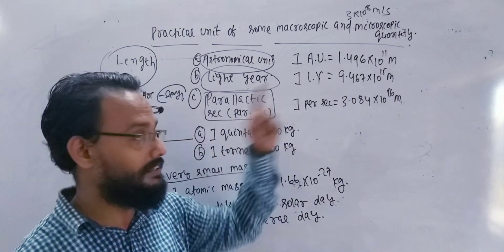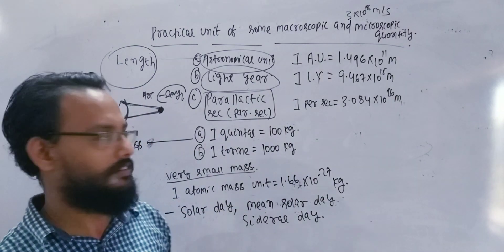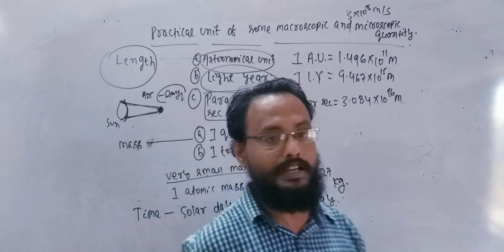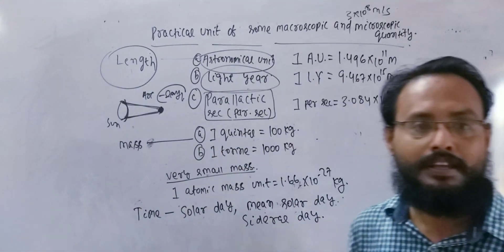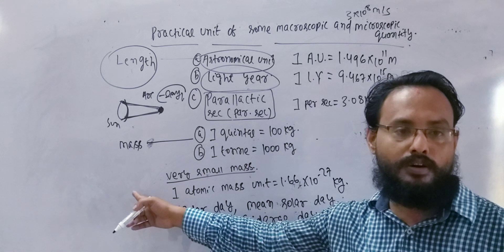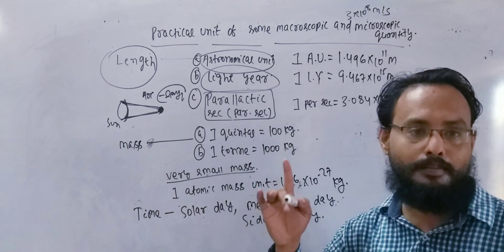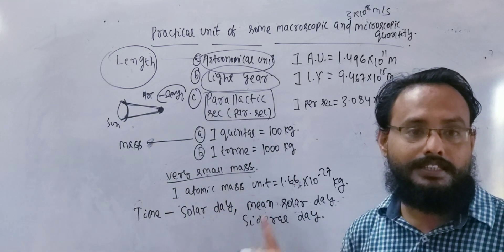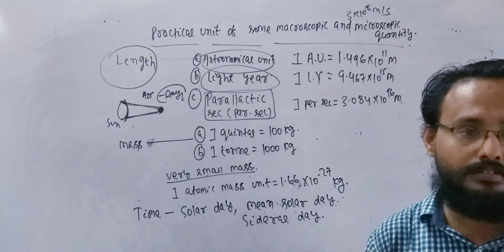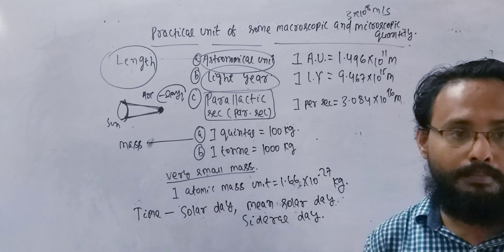This is all the macroscopic quantity. If you have a microscope, you can see 10 to the power minus 6 — 60 meters — you can see the blood cells.